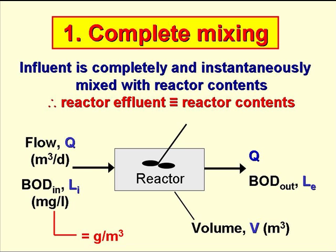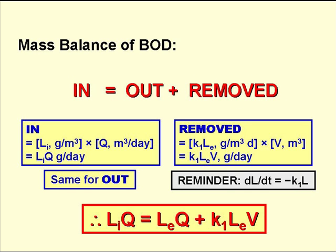So if we have a reactor of volume V receiving an influent flow Q of wastewater, which has a BOD of Li, and if the effluent BOD is Le, then we can do a BOD mass balance across the reactor, which simply says that what goes in equals what's being removed, plus what goes out. The BOD that goes in is Liq grams per day. The BOD that goes out is Leq grams per day. And the BOD that's removed in the reactor is K1LeV grams per day.